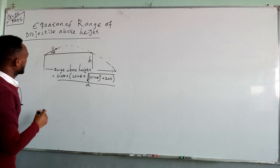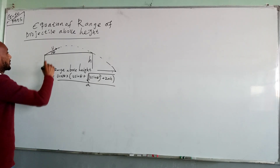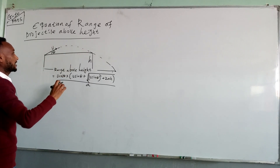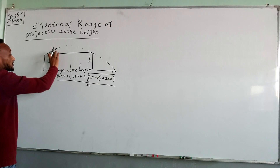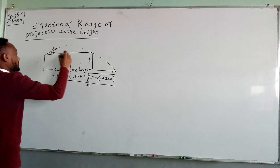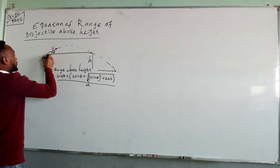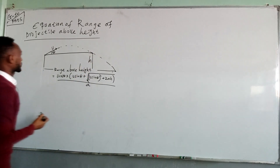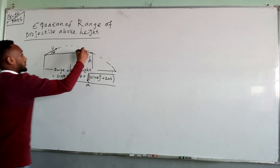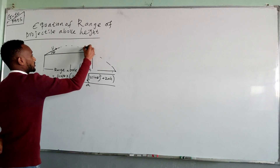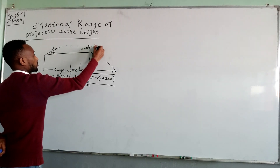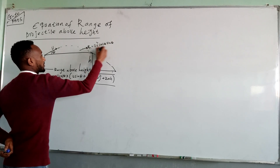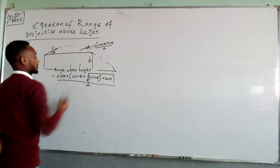In the previous classes, we saw the range of projectiles when the body is projected at some angle theta. From this point up to this point, the projectile has a range equal to 2u² cos θ sin θ over acceleration.